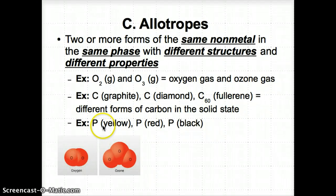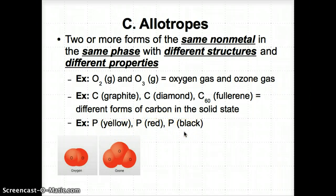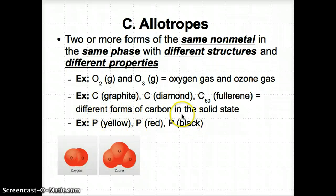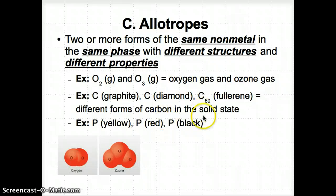Phosphorus has three different allotropes: yellow phosphorus, red phosphorus, and black phosphorus. All three are solids and different forms of phosphorus in the solid state. The non-metal P is the same for all three, and they're all in the same phase — solid. But they have different structures and therefore different properties, including immediately visible ones like their different colors.